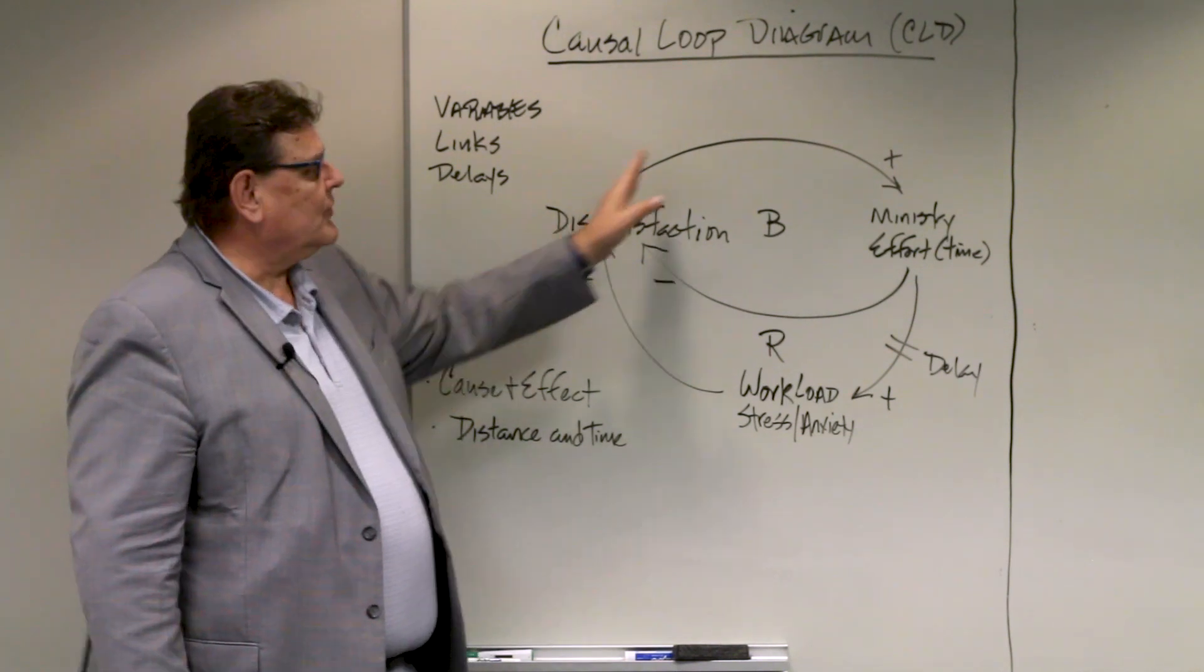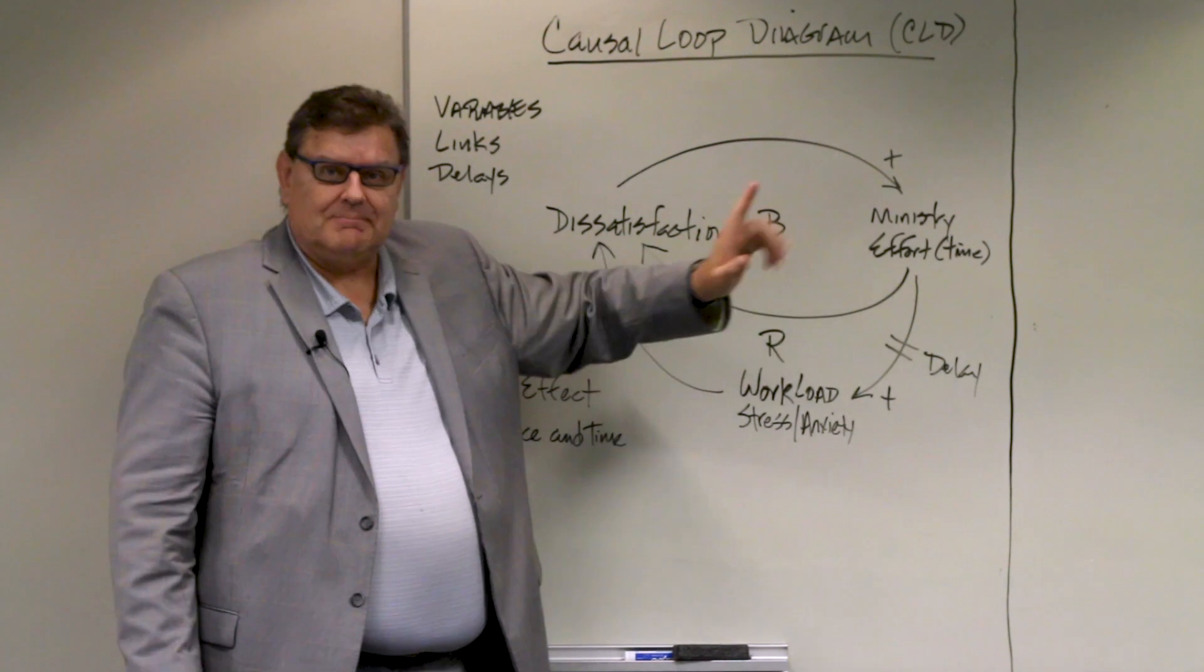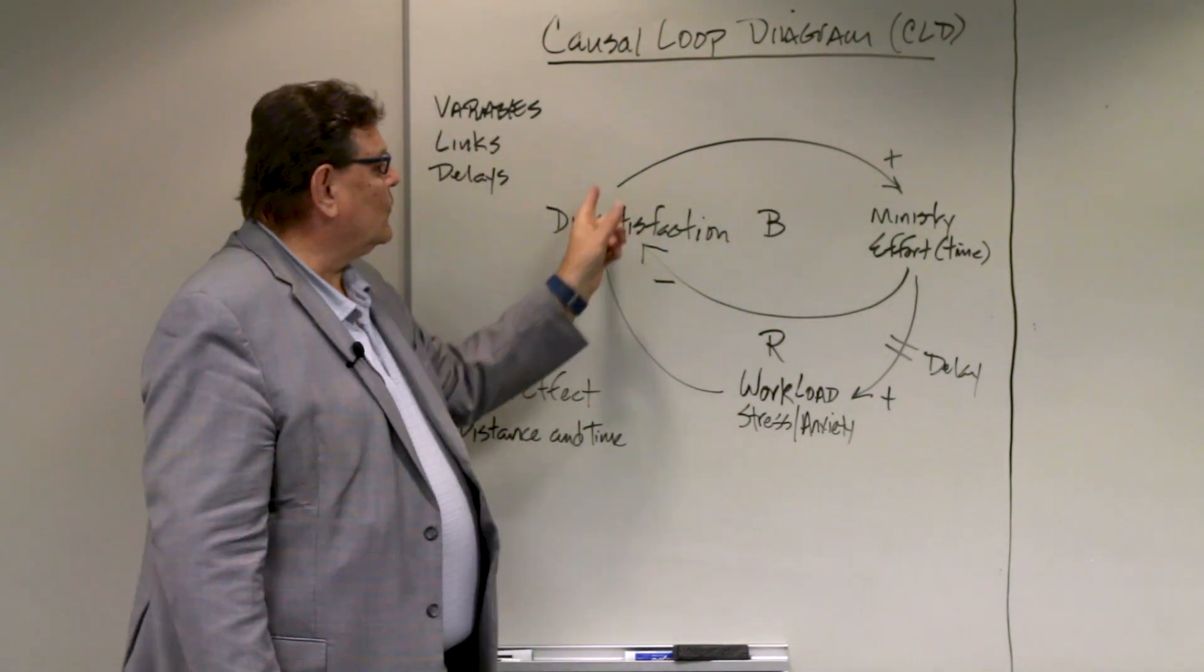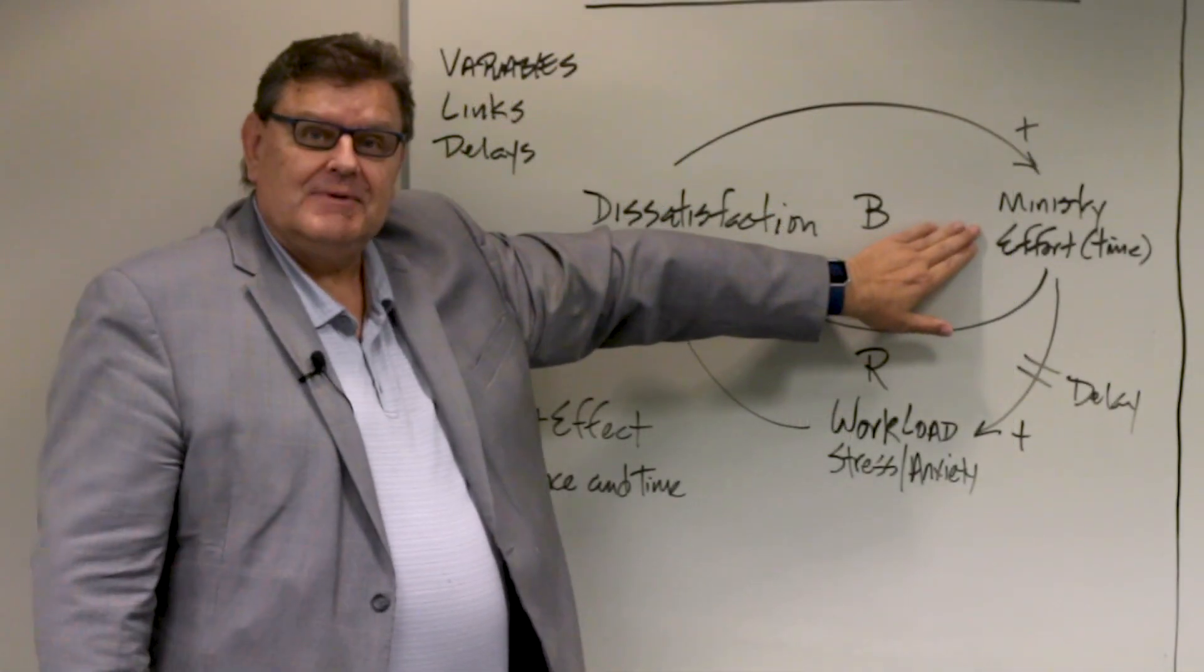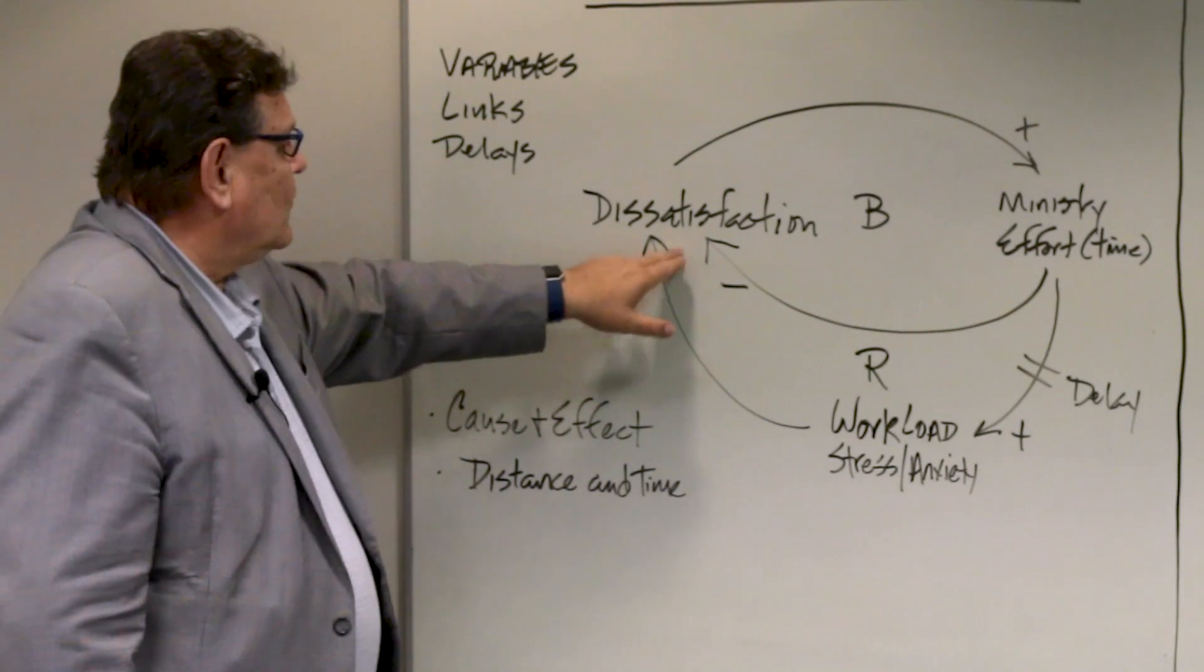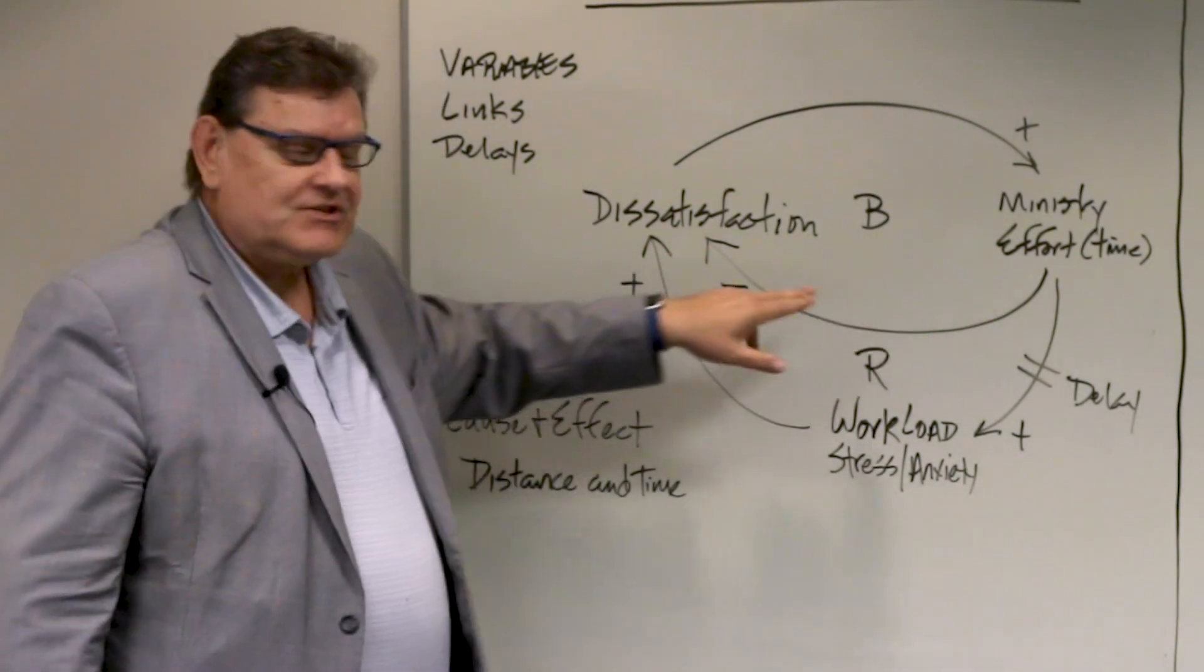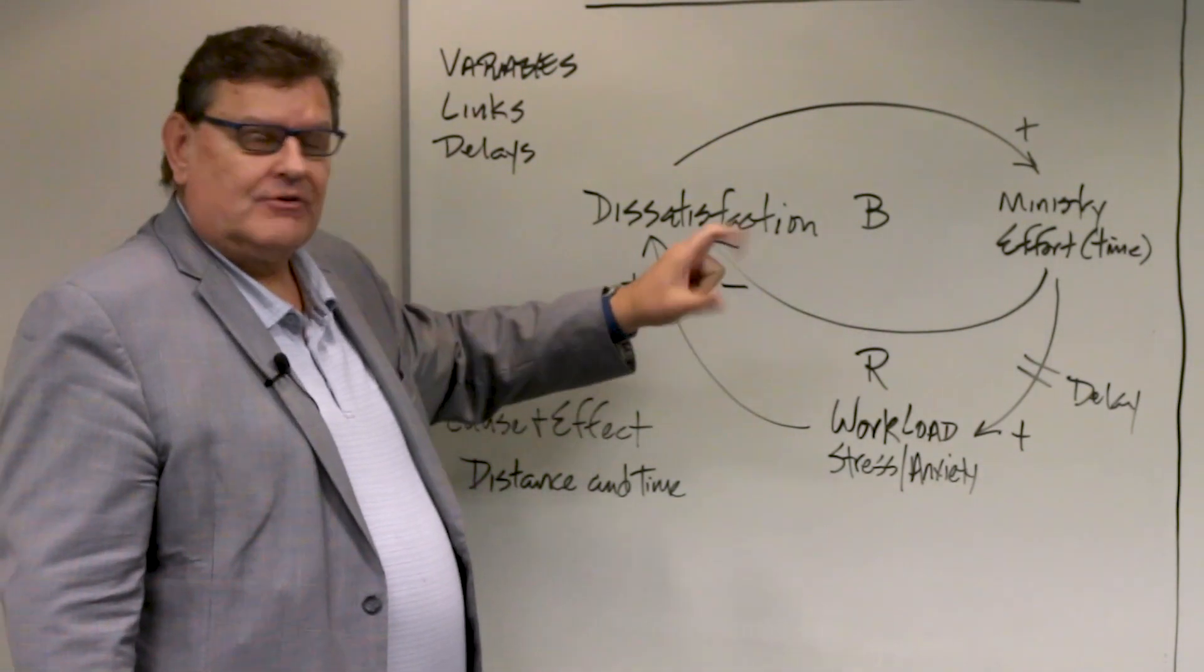As their dissatisfaction increased, Moses' ministry time or his ministry effort increased. That's a positive relationship. That's why we have a plus sign here representing that relationship. And so as his ministry effort and his ministry time went up, that would decrease the dissatisfaction. And so that's a negative relationship. That's why we have a minus sign here showing that's an inverse relationship.